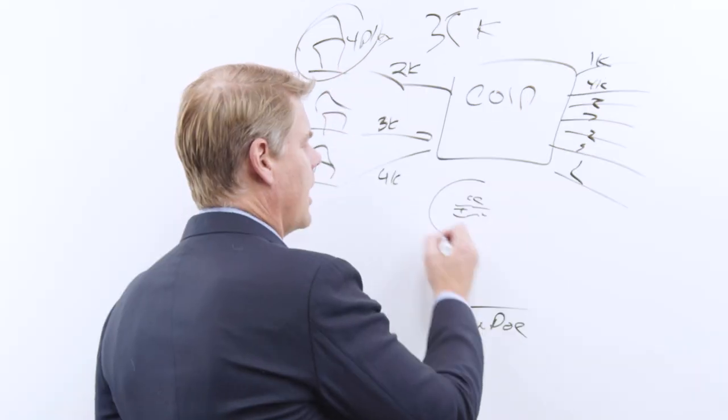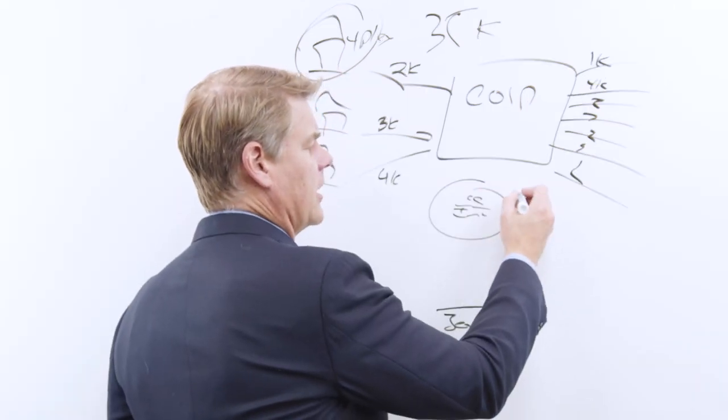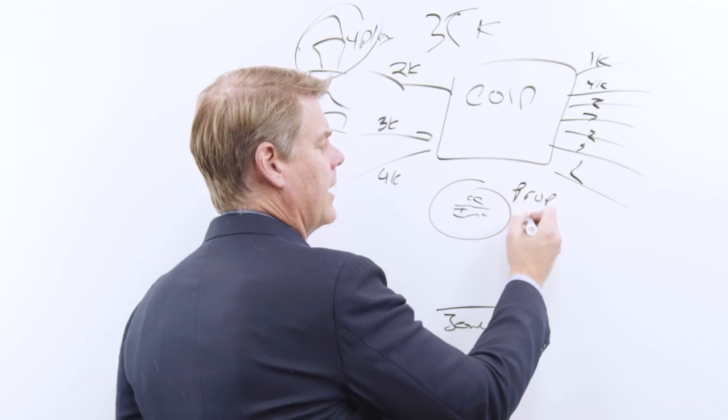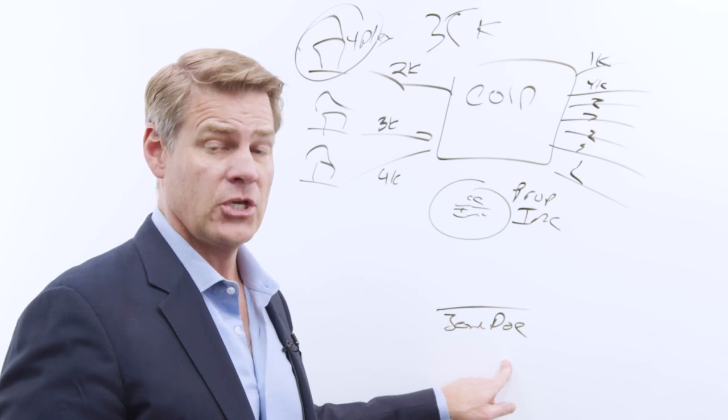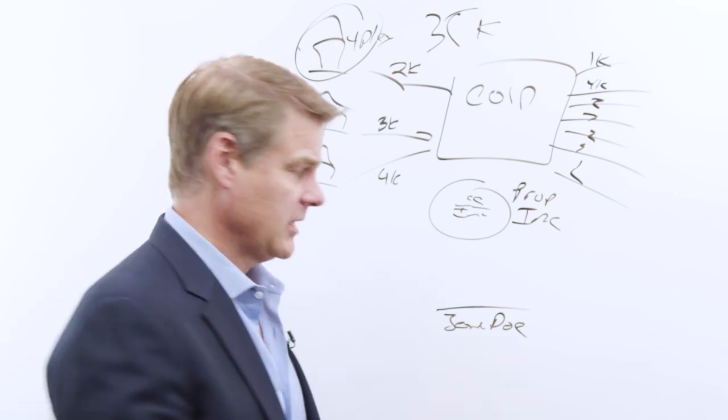not only did you obligate your company, because the contract was between property owner and her inc. But when you sign your name like this, just like this, you also obligate yourself personally. See,